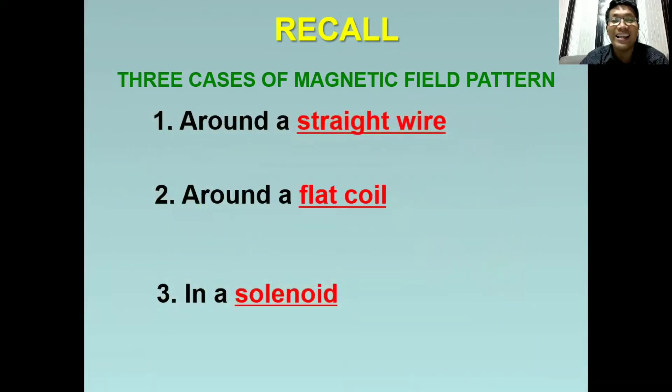Kung naaalala ninyo, natutunan natin na kapag may dumadaloy na kuryente sa isang konduktor, ito ay nakakaproduce din ng magnetic field. So paano natin mapapalakas ang magnetic field na ito? For a straight wire, we can increase the current. So the higher the current, the stronger is the magnetic field.